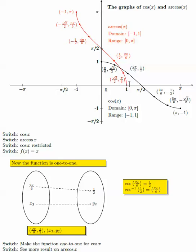Since the domain and range are switched, the domain for arc cosine x is from negative 1 to positive 1, and the range is from 0 to pi.